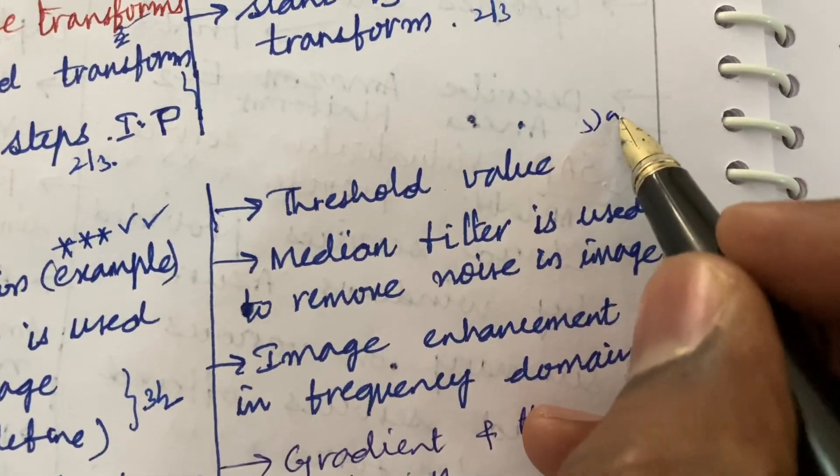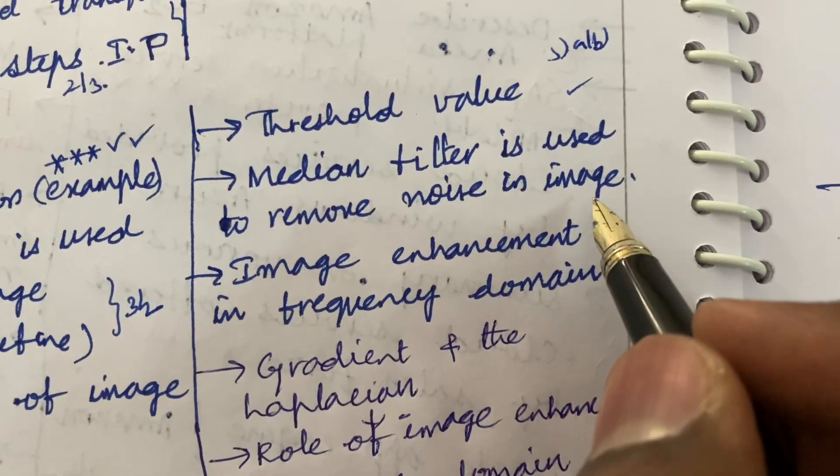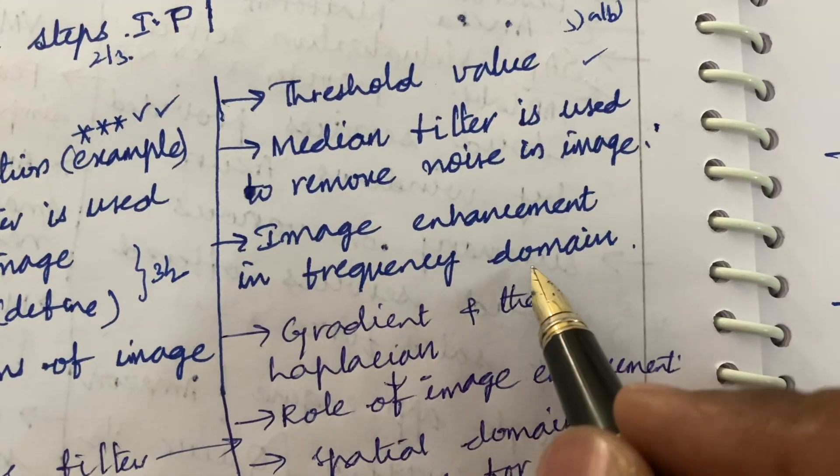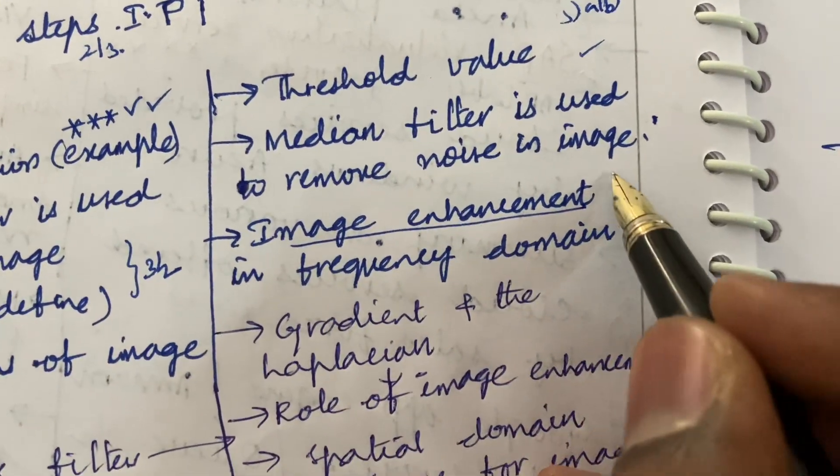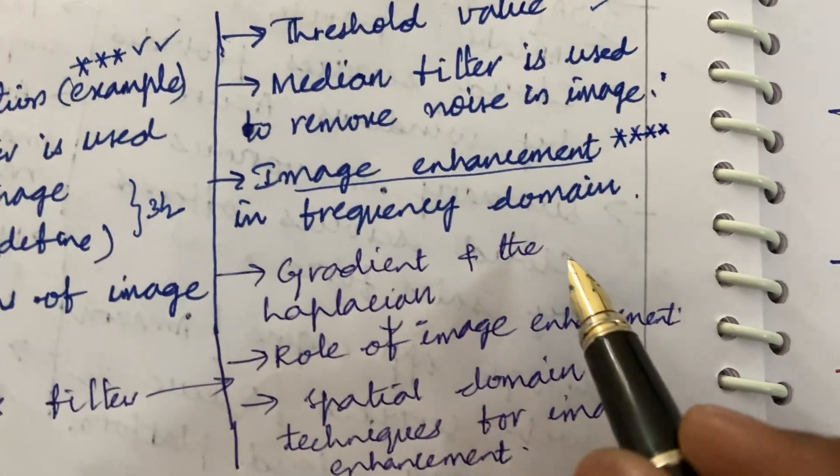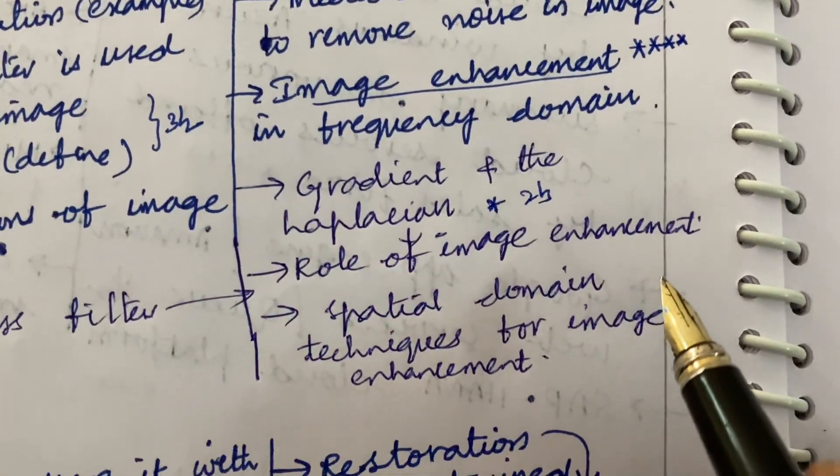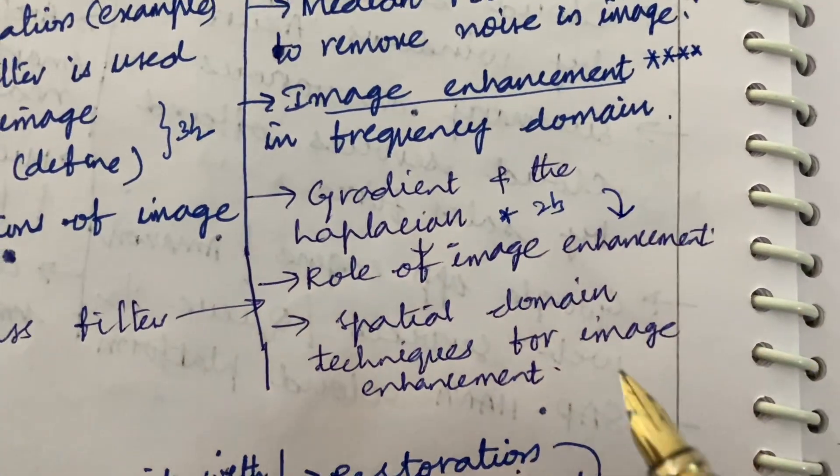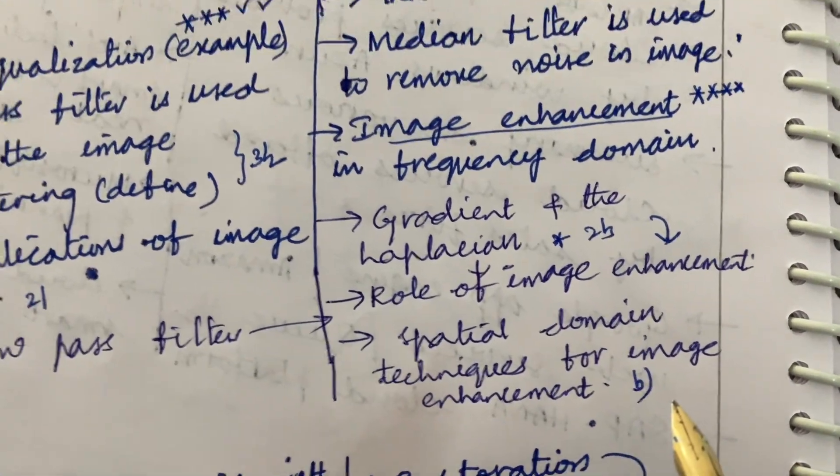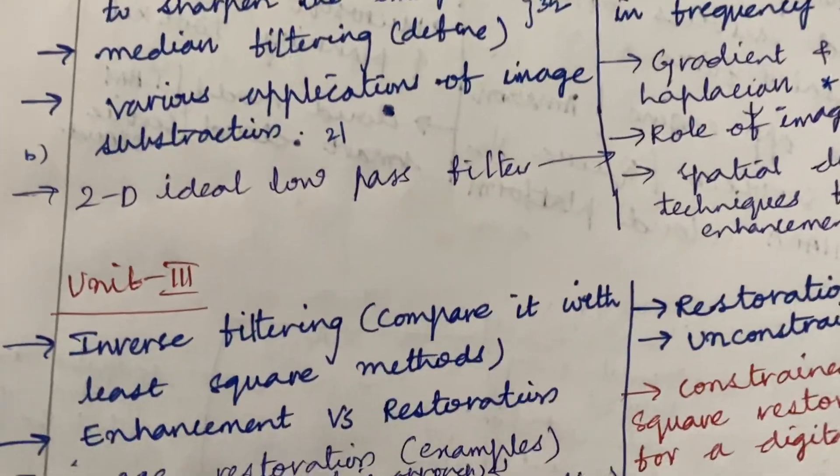Now the 5A and 5B is all about the threshold value. The definition median filter is used to remove the noise in image is said to be a 5A question. Dear students, image enhancement in frequency domain related to image enhancement, you are going to get a damn sure question this time. And the gradient and the Laplacian is said to be a 2 mark or 3 mark question and the role of image enhancement related to it. Spatial domain techniques for image enhancement may be 5 mark question this time in the question paper.